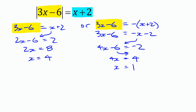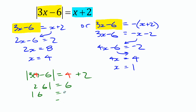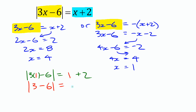Adding x to both sides gives 4x minus 6 equals negative 2, then adding 6 gives 4x equals 4, so x equals 1. We have two potential solutions. Checking in the original equation — absolute value of 3x minus 6 equals x plus 2 — both x equals 4 and x equals 1 work, giving us two valid solutions.